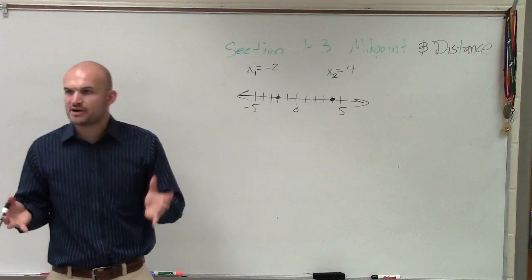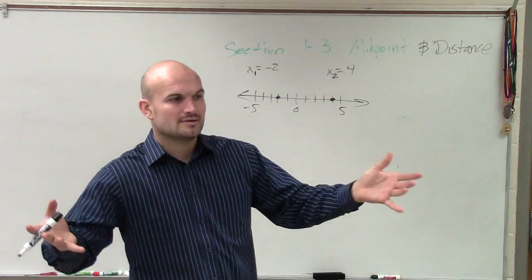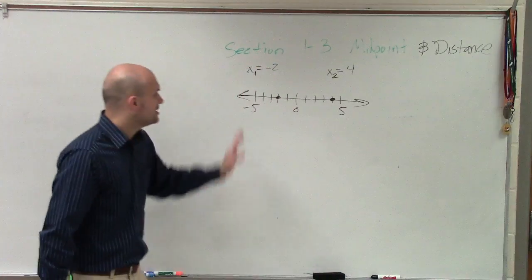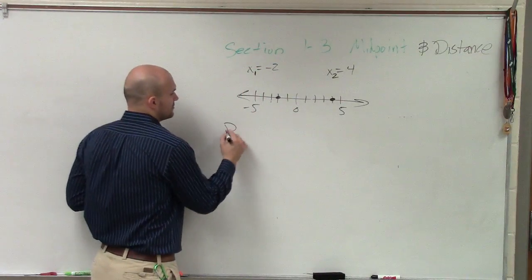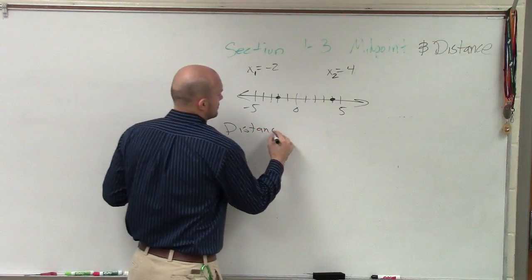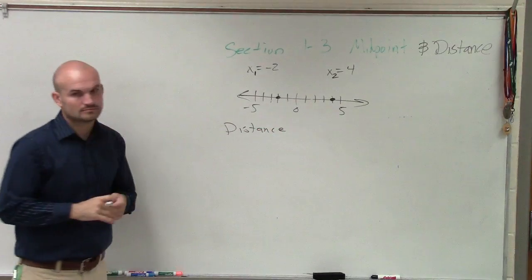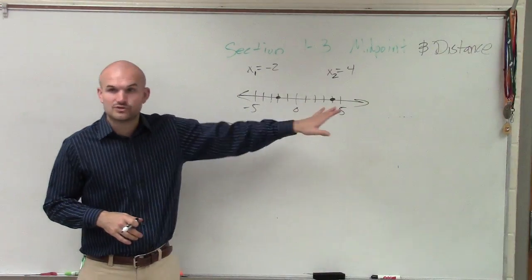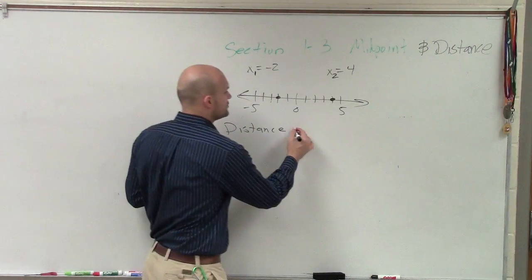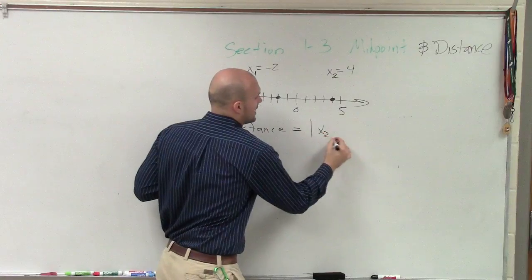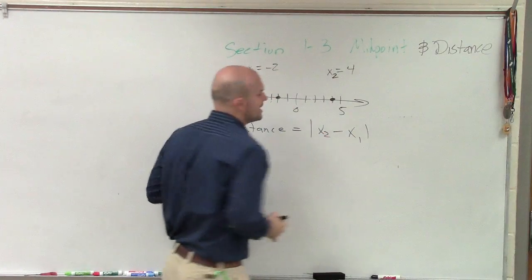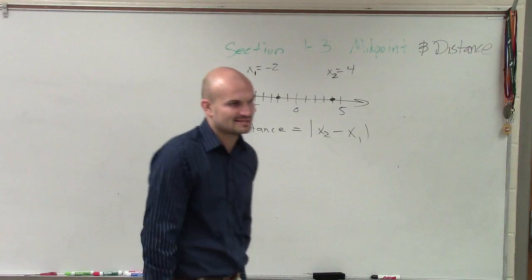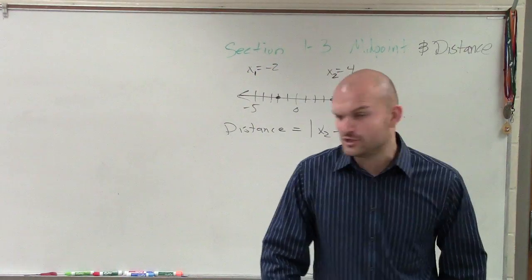Well, what if I asked how would it be algebraically without counting the tick marks? Does anybody know how can we find the distance between x1 and x2? Yes, we subtract the two distances. And what we're going to do is we subtract x2 minus x1. Now, it doesn't matter which one I label x2 or x1, but we subtract the two distances. And then I take the absolute value.